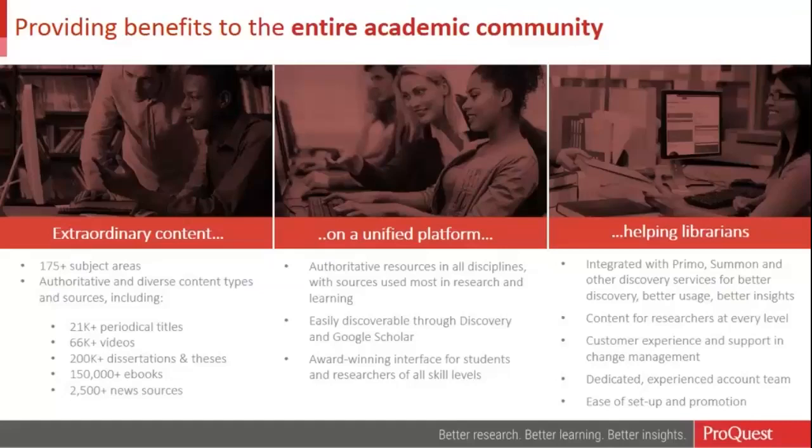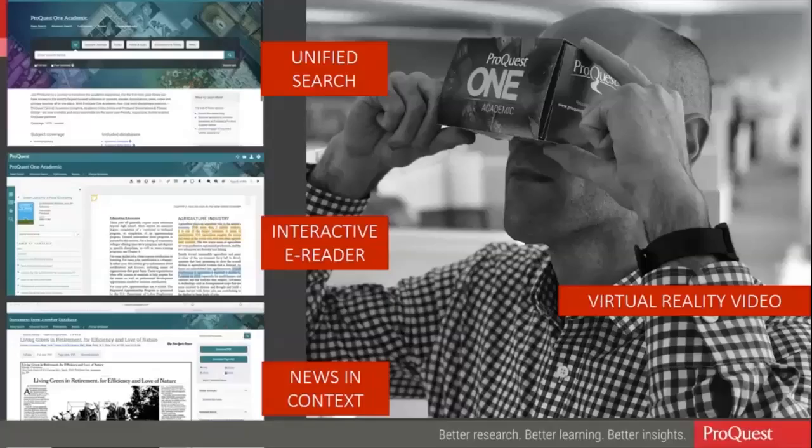Having a single consistent unified experience every time users reach a piece of content can really reduce stress and make the research process smoother. We have over 650 million items in ProQuest One Academic, and a similar look, feel, and navigation means researchers can get to problem solving faster and spend less time navigating different types of databases. Since we launched in January we have unified the search, introduced an interactive e-reader, and provided context to news — really looking across all formats critical to the research community.